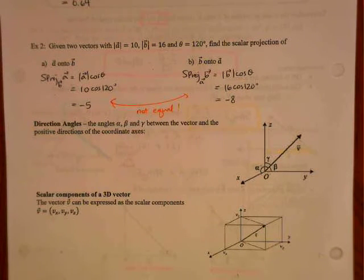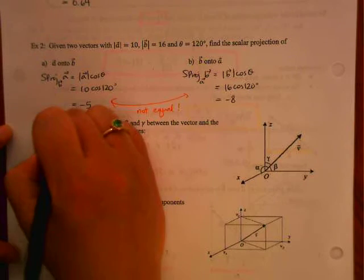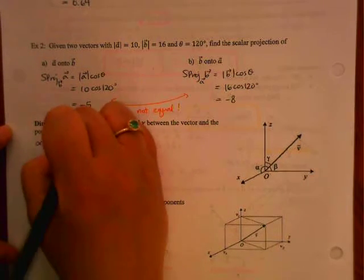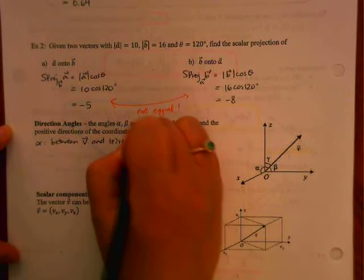So alpha was between the vector V and the positive x-axis.